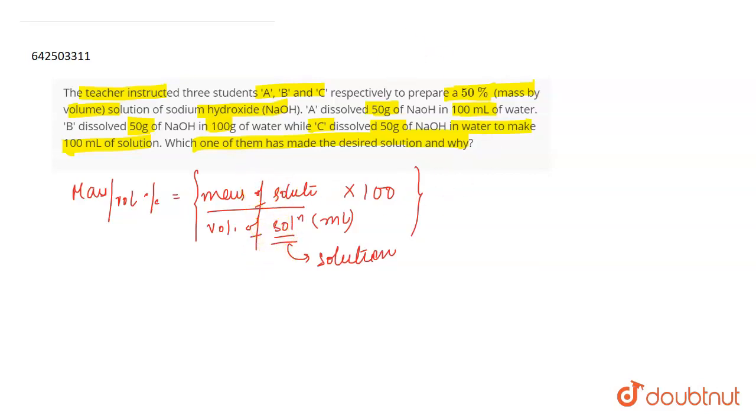If we talk about student A, student A used 50g NaOH and used water as a solvent. He used 100ml water, which means that student has used 100ml of solvent, but you actually need 100ml of solution.